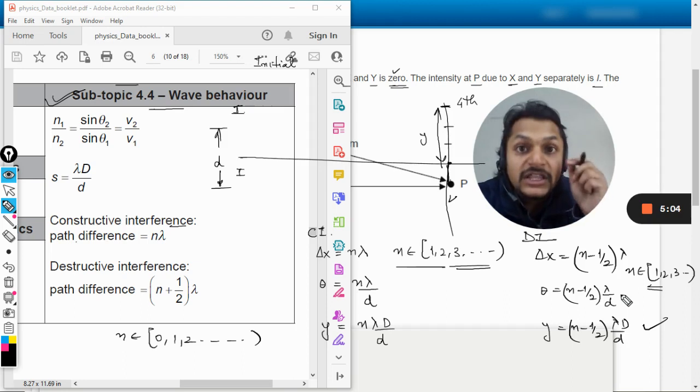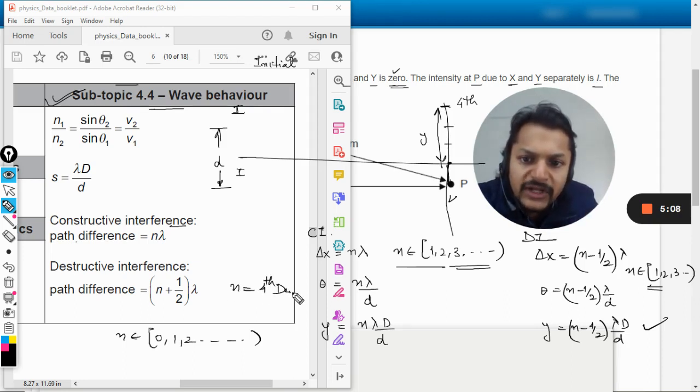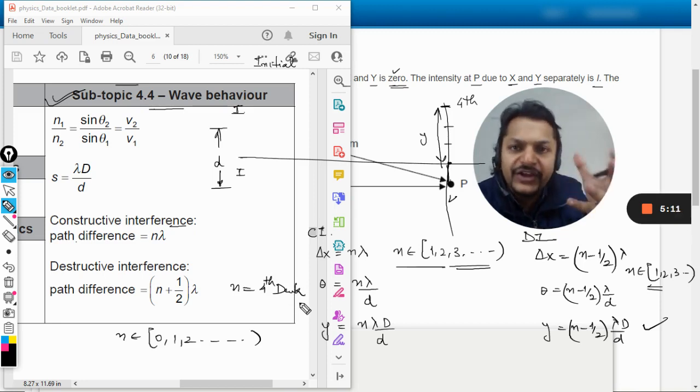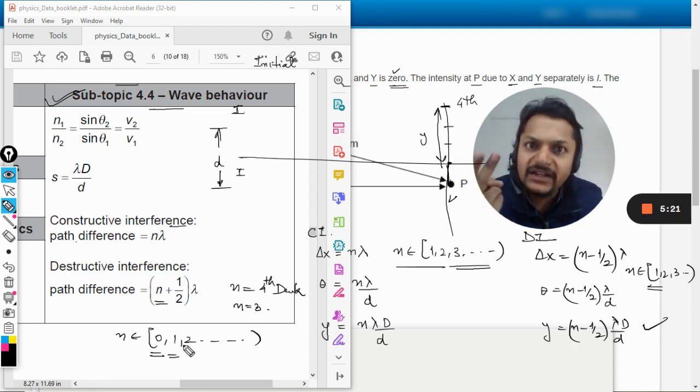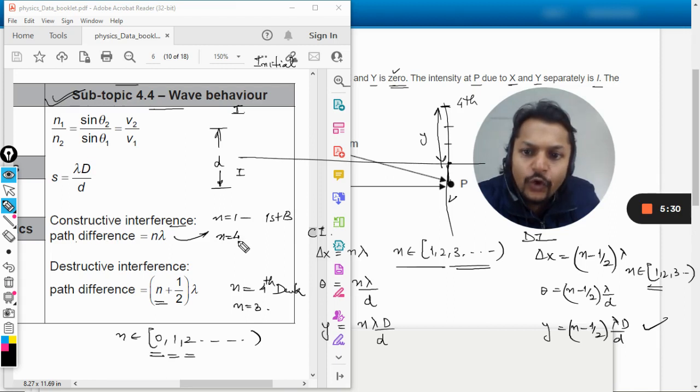If you're starting with 0, even that is not a problem. The problem is, if you talk about the fourth dark band you have to substitute n equal to 3. When n equals 0 you have the first dark, n equals 1 the second dark, n equals 2 the third dark. But for bright fringes, n equals 1 gives first bright, n equals 4 gives fourth bright. So this comes straightforward but here there is a discrepancy.